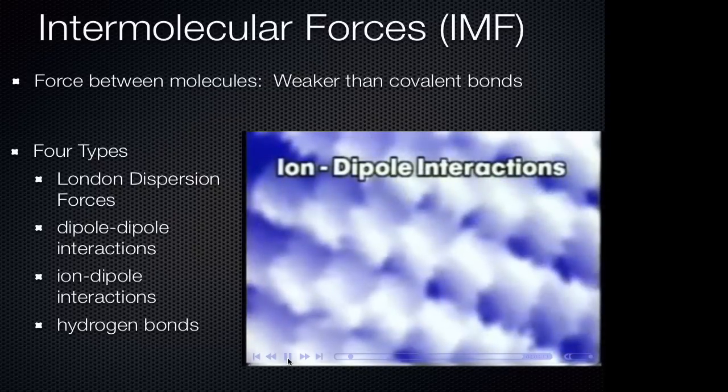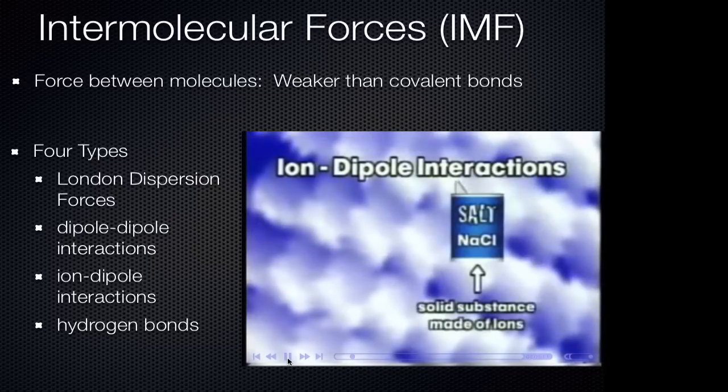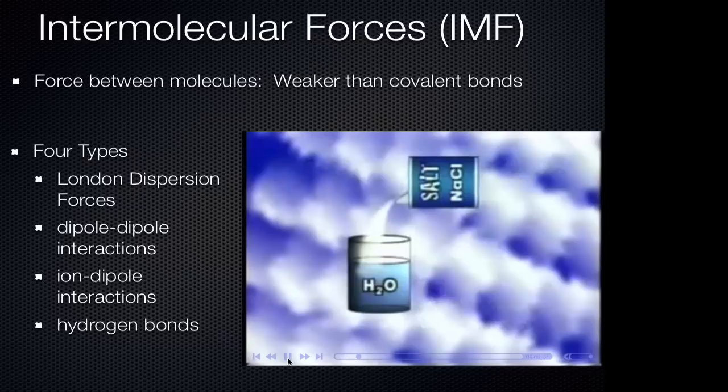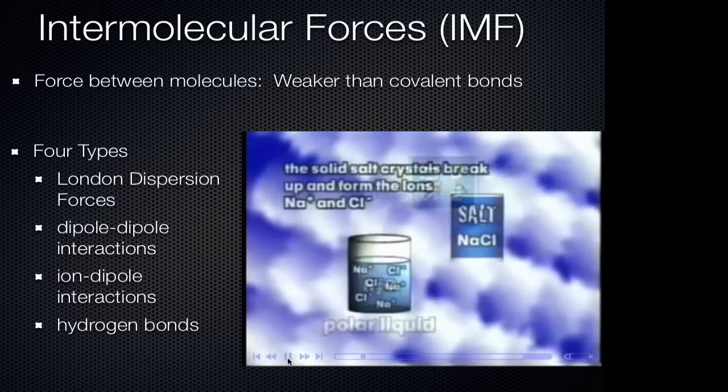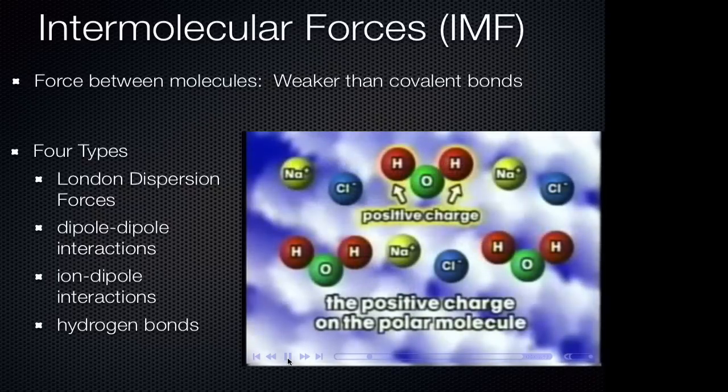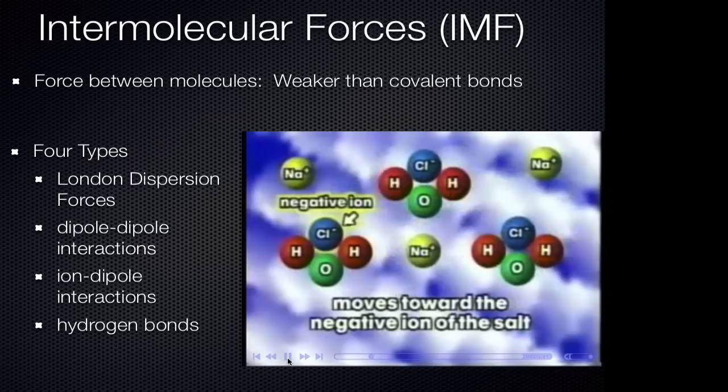Ion-dipole interactions exist when a solid substance made of ions is dissolved in a liquid consisting of polar molecules. For example, when sodium chloride, an ionic solid, is dissolved in water, a polar liquid, the solid salt crystals break up and form the ions Na+ and Cl-. The positive charge on the polar molecule moves towards the negative ion of the salt and vice versa.